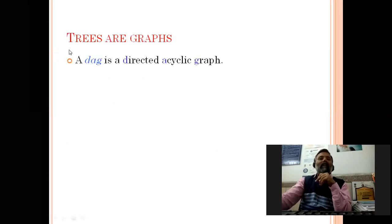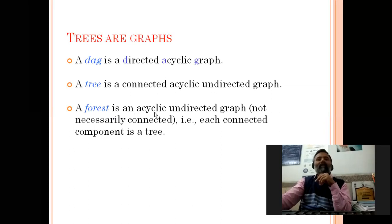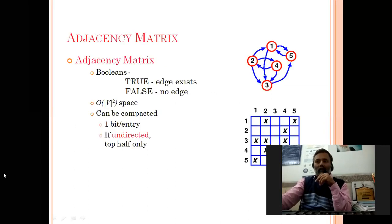A directed acyclic graph is called a DAG. A tree is a connected, acyclic, undirected graph. A forest is an acyclic undirected graph but not necessarily connected — if there are several connected components, we call it a forest.